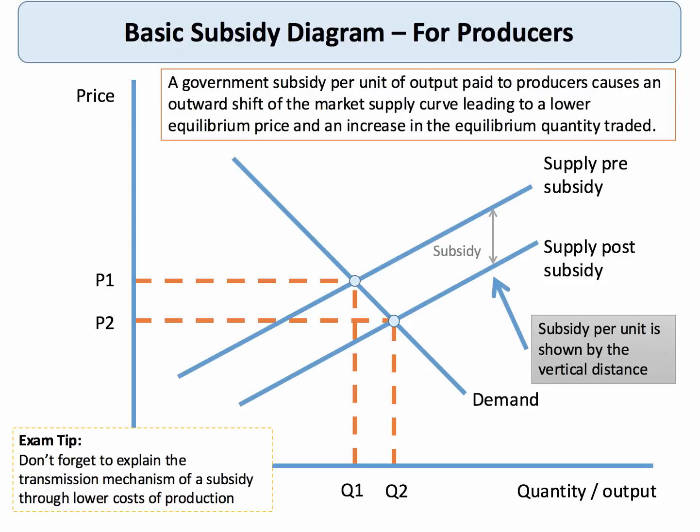A government subsidy per unit of output paid to producers causes an outward shift of market supply, leading to a lower equilibrium price and an increase in the equilibrium quantity traded. The subsidy is the vertical distance between the two supply curves, which in the multiple choice question would have been S1 and S2.